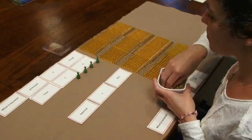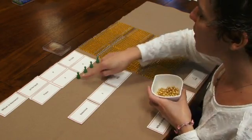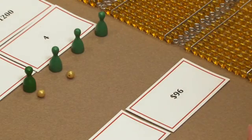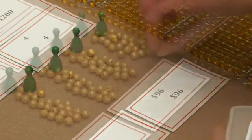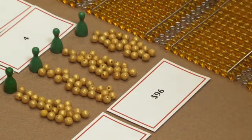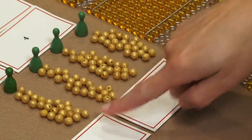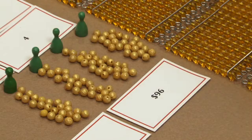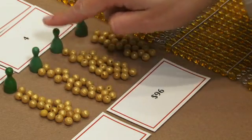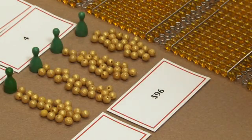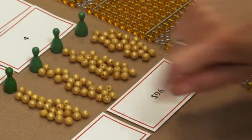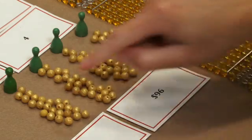So we're going to distribute the $96 amongst our four years to find out what we earn in one year. So now we've distributed our total interest of $96 evenly amongst our green Skittles, which are representing the four years. We're going to count how much interest each Skittle got for one year.